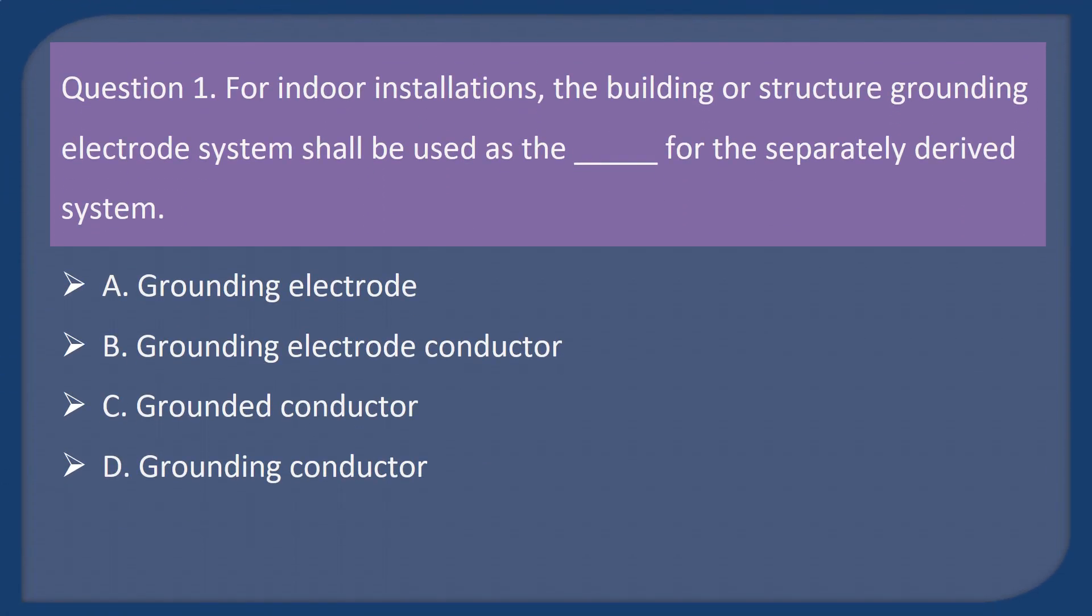Question 1. For indoor installations, the building or structure grounding electrode system shall be used as the ____ for the separately derived system. A. Grounding electrode. B. Grounding electrode conductor. C. Grounded conductor. D. Grounding conductor.